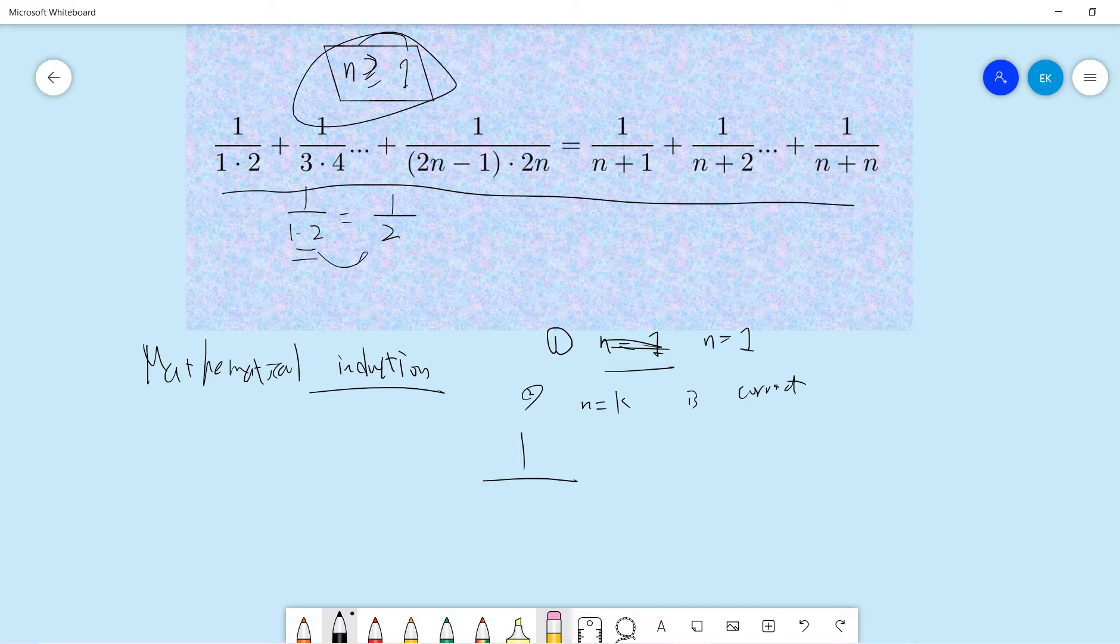So that means we have 1 over 1 times 2, 3 times 4, up to 1 over 2k minus 1, 2k equals 1 over k plus 1, up to k plus k, which is 2k. Okay, so all we need to check is very easy.